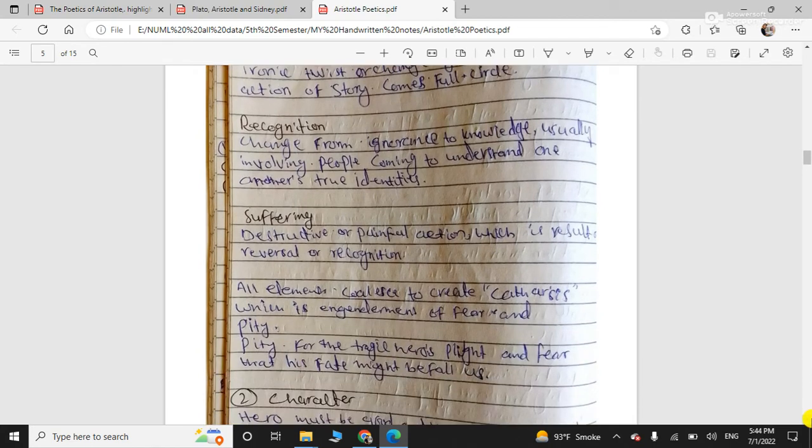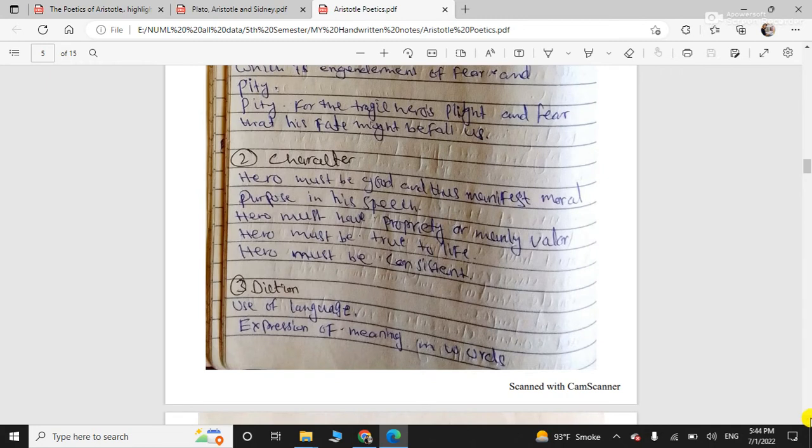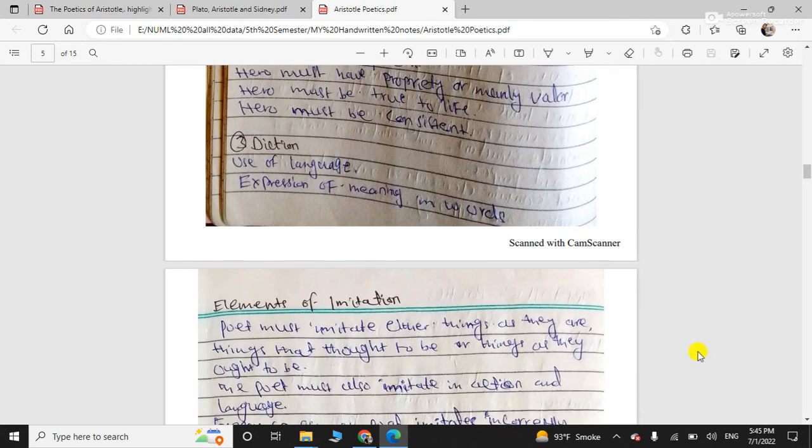Suffering. So, the tragic hero suffers. And the suffering, it evokes catharsis. And character, what type should it be? Character must be good. Good character should be there. Noble family. Moral purpose in his speech should be there. And he must have propriety and manly valor. Courageous manly valor should be there. And he must be true to life and must have consistent and tragic flaw is also important part of tragic character, tragic hero. He has hamartia or tragic flaw. You know these things. You have studied in classical drama.